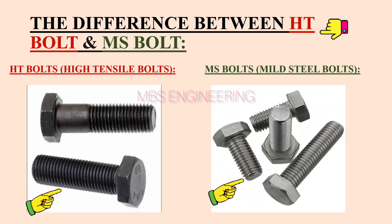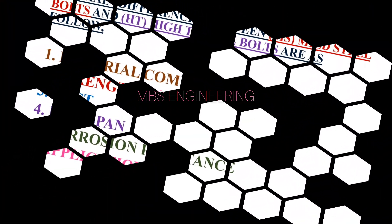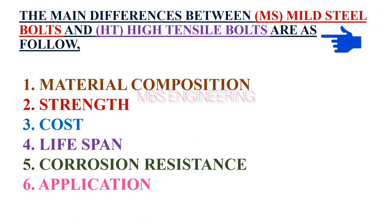Please see the pictures of the HT and MS bolts below. Next, we will understand the main differences between MS (mild steel) bolts and HT (high tensile) bolts as follows.